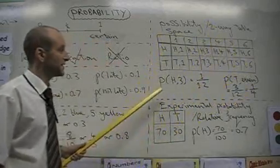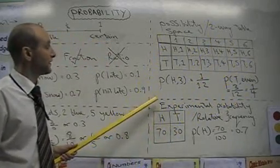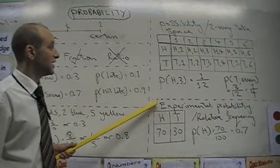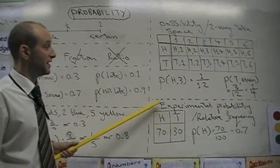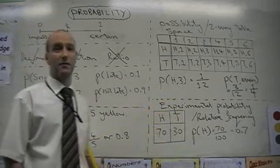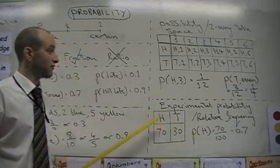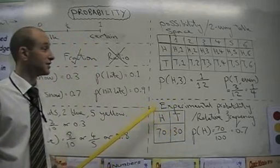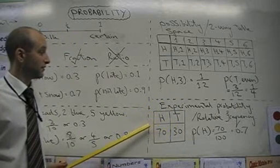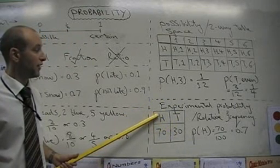The other aspect of probability that we're going to cover at this foundation GCSE stage is experimental probability. This is where they've carried out an experiment and they show you the results and then ask you some questions about the results. Here, we've thrown a coin 100 times.